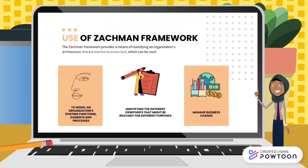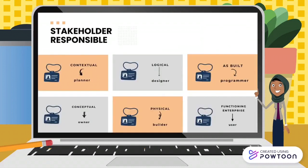Now we will see the uses of the Zachman Framework. The Zachman Framework provides a means of classifying an organization's architecture. It is a proactive business tool. It can be used to model an organization's existing functions, elements, and processes. Next, it will identify the different viewpoints that might be relevant for different purposes. Lastly, it will manage business change.